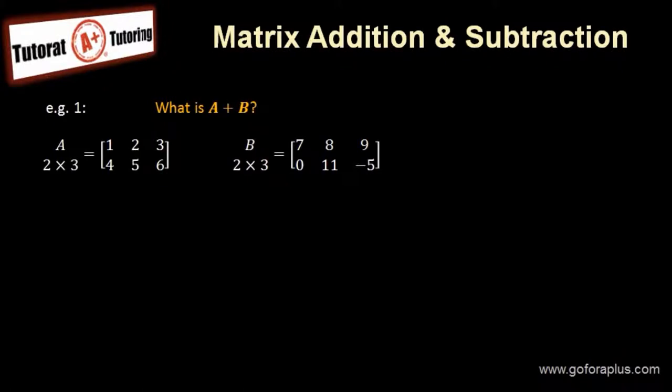So how do we do matrix addition? The first condition is to have the same size. So we have matrix A 2 by 3 and matrix B 2 by 3. They do have the same size, so we can actually perform the addition now.